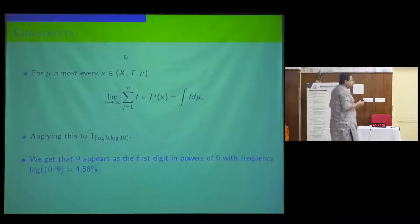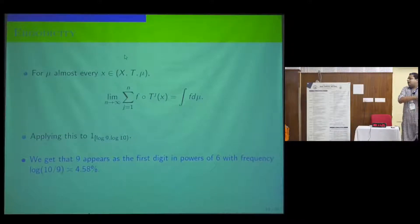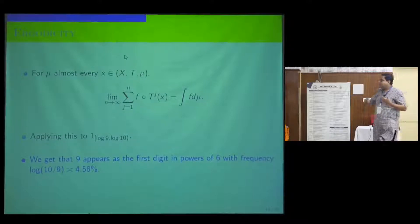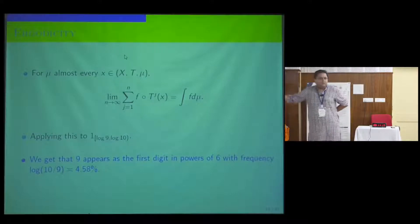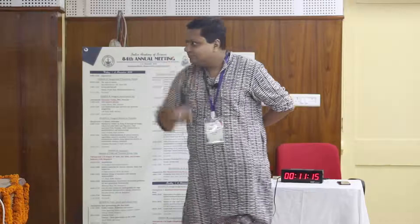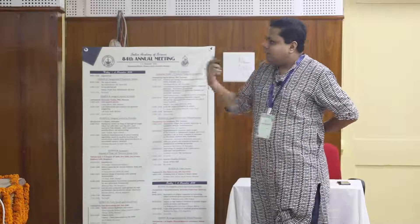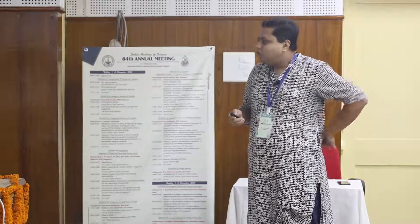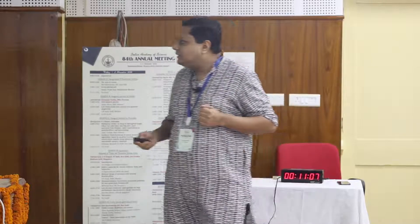So approximately 4.5% of all powers of 6 start with a 9. This is a simple example of how one can connect the long-term behavior of chaotic systems with a question that is purely in number theory. Let's try to move ahead in terms of complexity.